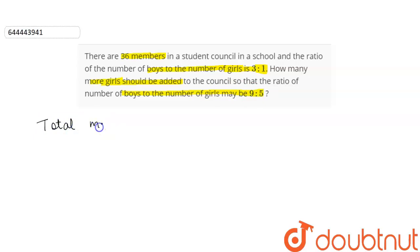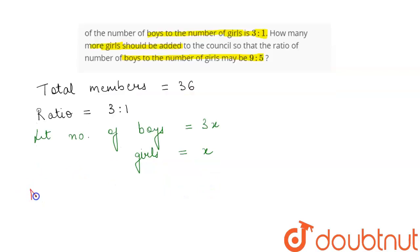We are given total number of members to be equal to 36, and the ratio of boys to girls is 3:1. So we can let the number of boys be equal to 3x and the number of girls be equal to x. Now according to the question,